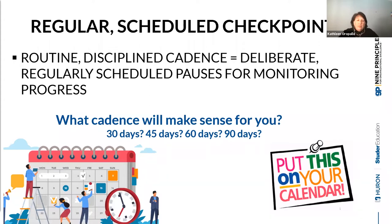The first thing to think about is regular scheduled checkpoints. The concept of routine discipline cadence really means deliberately and regularly scheduling pauses for monitoring progress. There's no right or wrong on the cadence, but most people typically look at things in 30, 45, 60, or 90-day intervals or cycles. If you're new to stoplighting, it helps to start at a 30-day period to build that routine and practice without as much pressure on the accountability side.